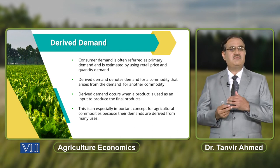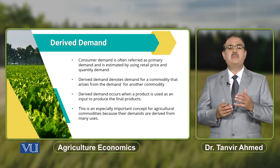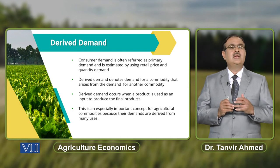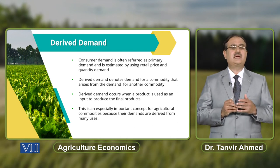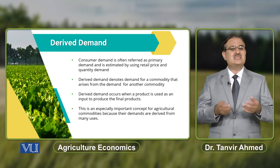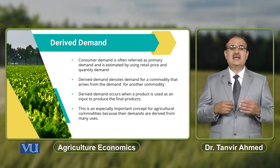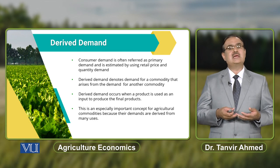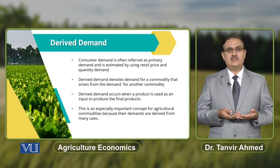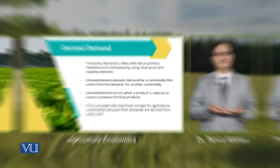We talked about milk, wheat, and poultry meat — all of these indicate that in agricultural economics, derived demand is an important concept for agricultural commodities. If we replicate this concept with reference to corn produced in a particular country, the same principle applies.